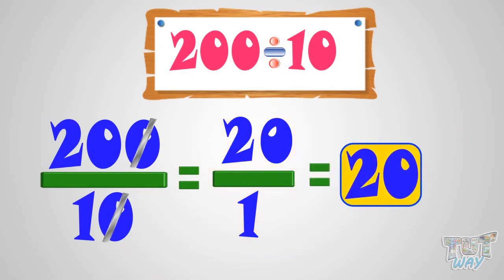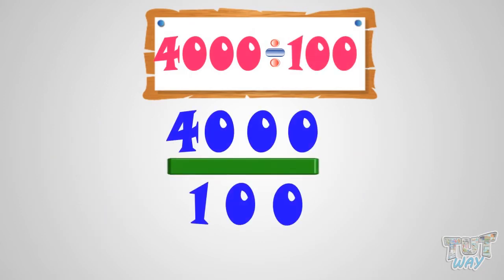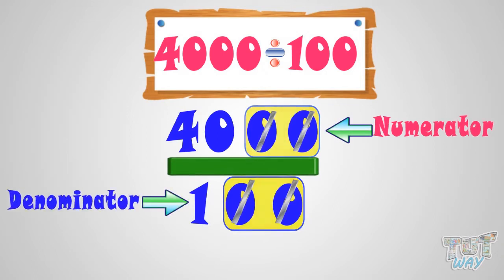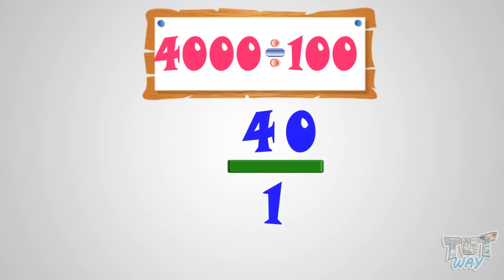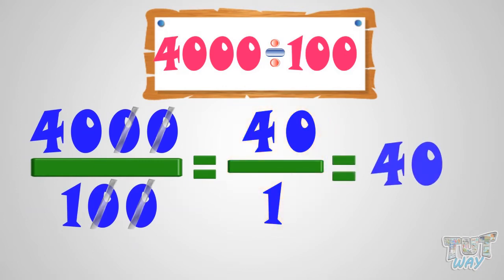Now let's take another example — let's divide 4000 by 100. In order to divide with 100, we have to cut the two rightmost zeros from the numerator and denominator. So, we are left with 40 by 1. So, 4000 by 100 equals 40 by 1 equals 40.